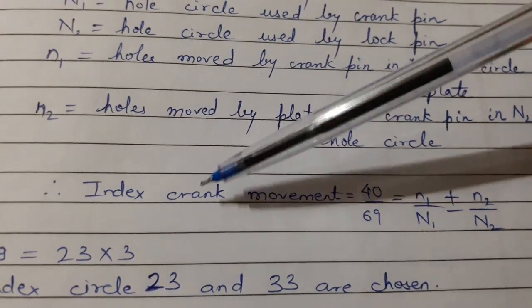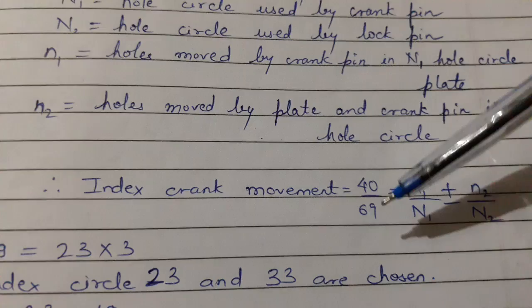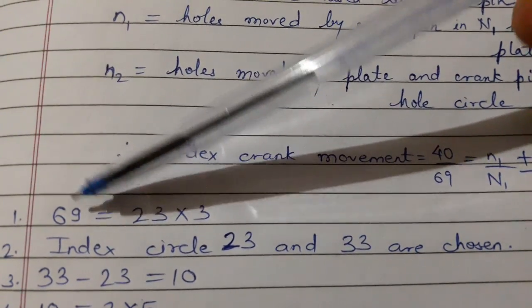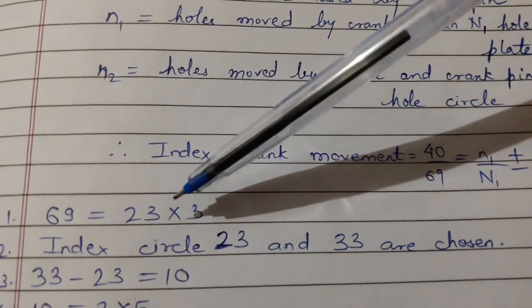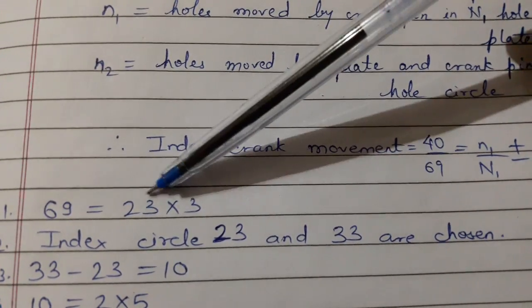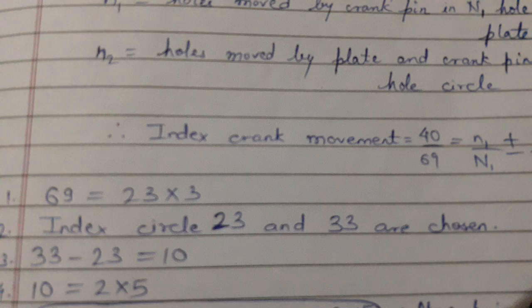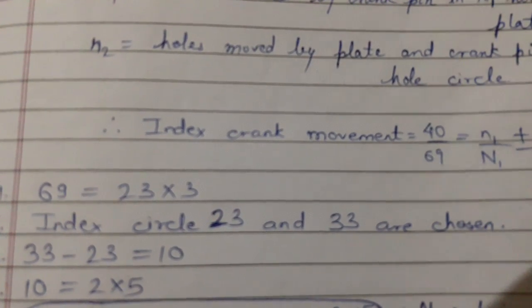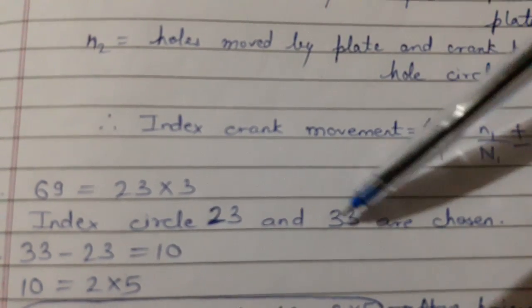Now index crank movement is 40 divided by 69, that is the number of divisions. So first part, what we have to do is resolve the number of division which is given, so it is 23 into 3. Now we have to choose the circle. The first circle is 23. Now we have to choose another circle.